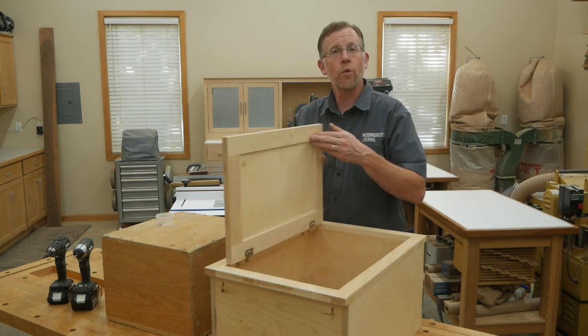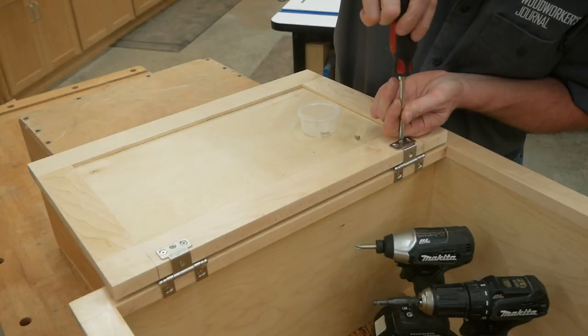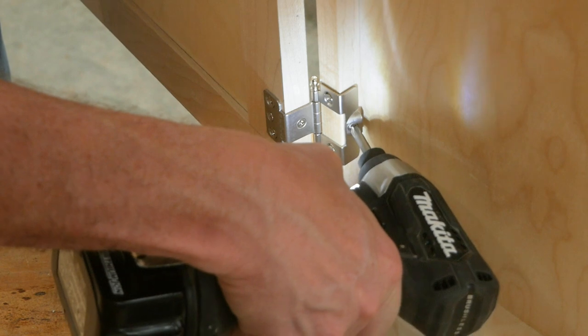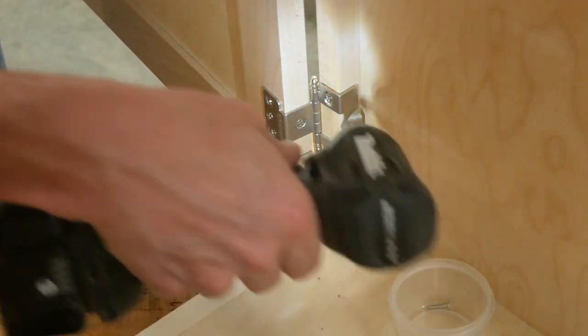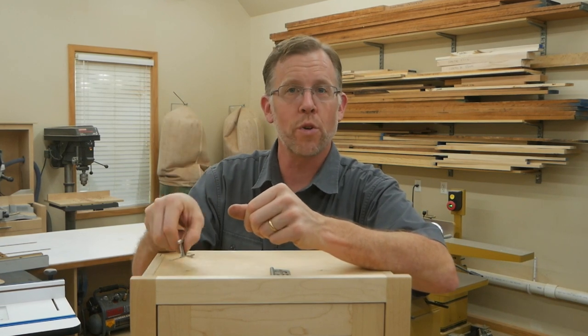Once you've got the door where it needs to be, install the rest of the screws in the hinge leaf holes. And don't forget, two of these screws are angled into the back of the face frame. So that takes care of installing wrap-around style no-mortise hinges. But there's a second style.